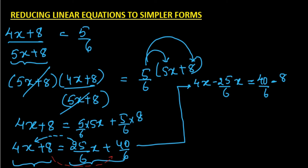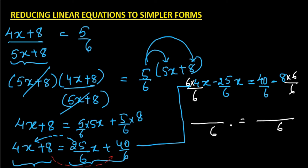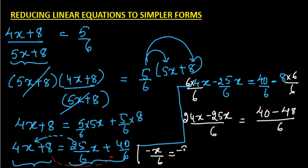To make the denominators the same, we multiply and divide by 6, making the LCM equal to 6. So 24x − 25x = 40 − 48, which gives −x/6 = −8/6.